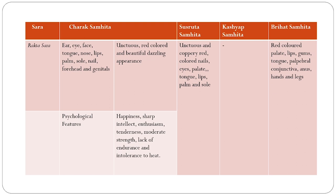Acharya Sushrut has described the features of Rakta Sara individuals as: Snigdha, Tamra Nakha, Nayana, Talu, Jihva, Oshtha, Pani, Pada-Tala — the nails, eyes, palate, tongue, lips, palm, and sole are unctuous and coppery-red. This provides a clear demarcating feature between Tvak Sara, whose skin is lustrous and unctuous, and Rakta Sara, whose skin is unctuous and coppery-red.